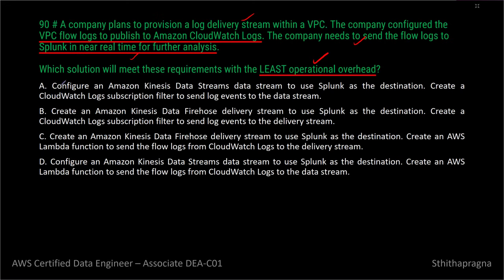Question 10: Looking at the options, two use Kinesis Data Streams and two use Firehose. Directly sending VPC Flow Logs to Splunk via Firehose is not valid as a direct destination in Data Streams. Using Lambda as an intermediary adds operational overhead. The answer is option B: use a CloudWatch Logs subscription filter to route VPC Flow Logs directly to a Kinesis Data Firehose delivery stream, which is configured to deliver directly to Splunk's HTTP Event Collector — eliminating the need for an intermediate Lambda function.